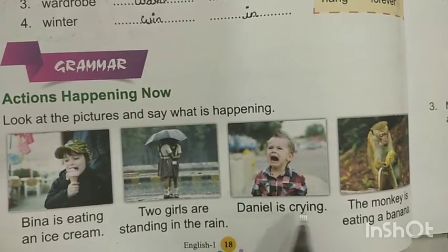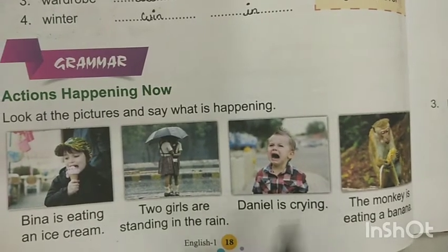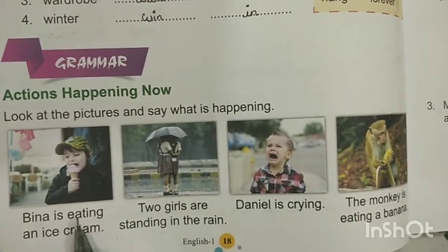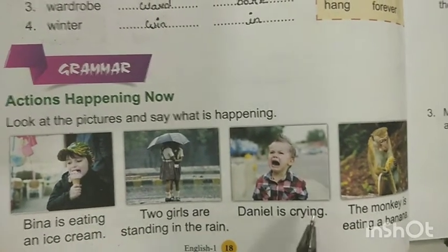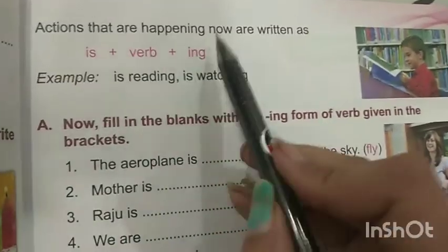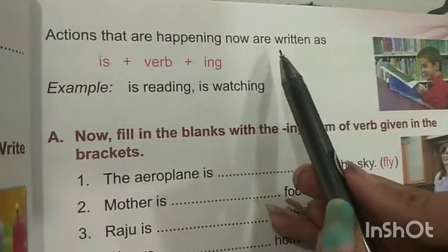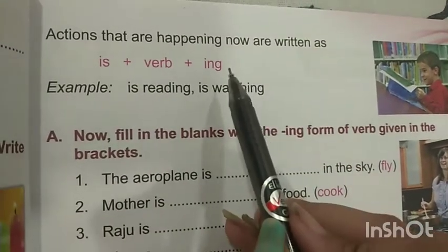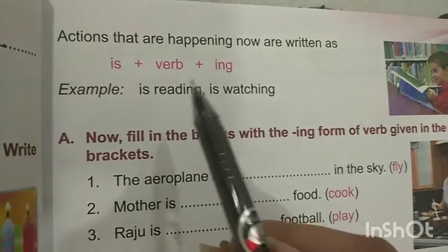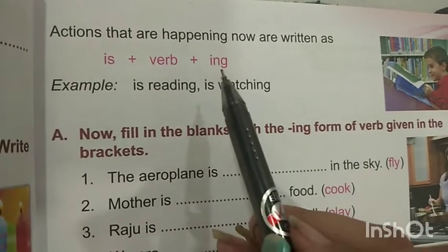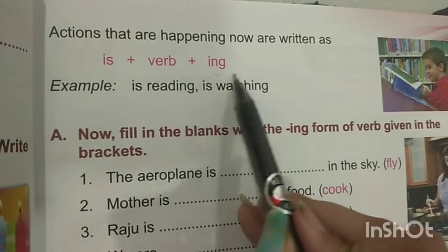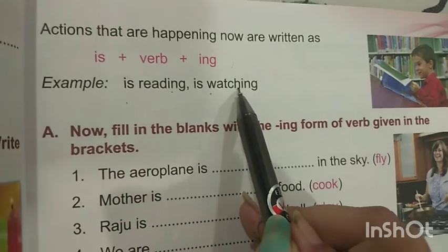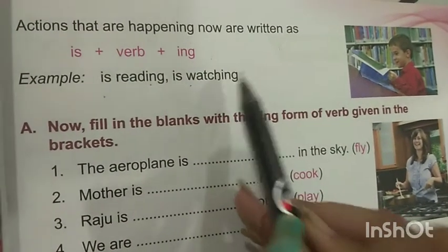The second one — Daniel is crying. So here some action is happening: eating is an action, standing is an action, crying is also an action. Actions that are happening now are written with is and ing added to the verb — is eating, is crying, is standing, is reading, is watching. We will understand this better through the exercise.